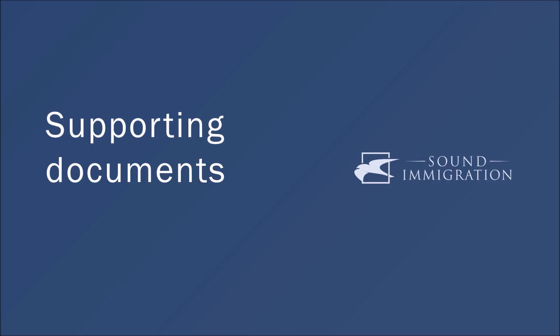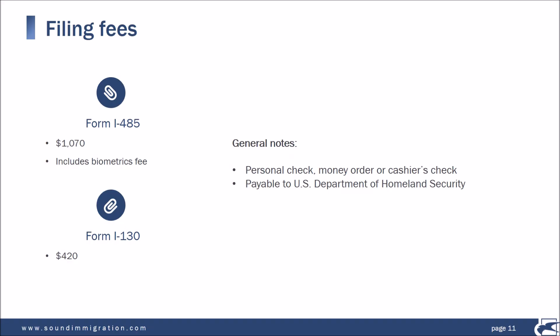Now let's talk about the supporting documents that you're going to want to file along with the packet. First, the filing fees — the government wants its money. The application fee for the I-485 is pretty expensive: it's $1,070, and that includes a biometric fee. For the I-130, it's $420. It's important to file these as separate checks, money orders, or cashier's checks — you don't want to combine them into a single payment. We've observed over the years that occasionally the USCIS mailroom will reject the packet if these forms are put together, so be on the safe side and keep them separate.